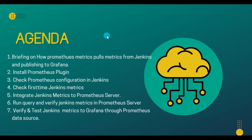Today's agenda: first, a brief on how Prometheus metrics pulls data from Jenkins and how it publishes to Grafana. Second, the plugins required to install Prometheus on Jenkins. Third, configurations needed from the Jenkins side for Prometheus. Fourth, how Jenkins metrics look through the Prometheus plugin. Finally, we'll integrate Jenkins metrics to the Prometheus server, run queries, verify data is being fetched correctly, and view Jenkins metrics in Grafana.